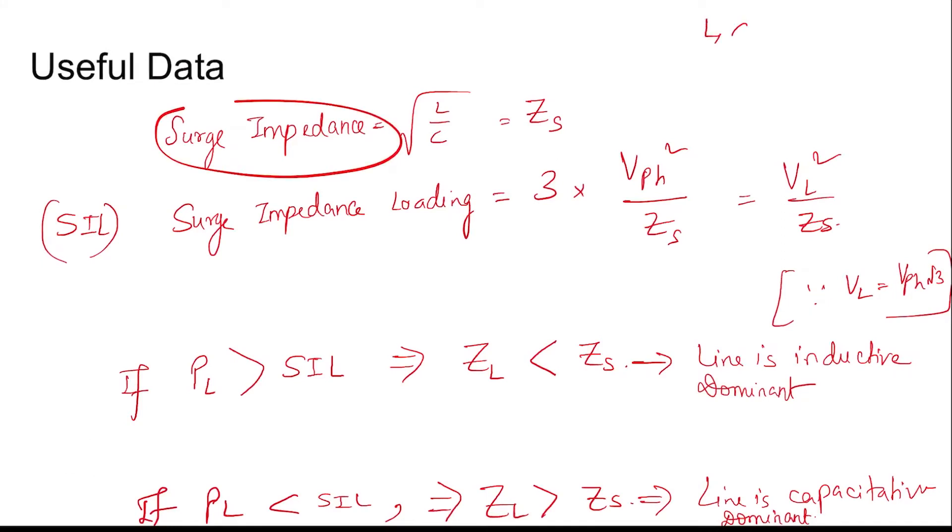Where L and C are line parameters in per kilometer. But you see that the surge impedance is independent of the length - length independent. Now surge impedance loading is given by 3 times V phase squared by Zs, which is V line squared by Zs.